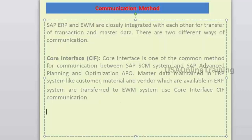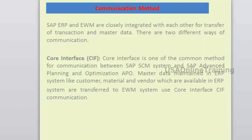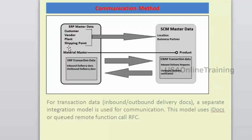When you execute the CIF transaction in ECC, all the master data is transferred into your EWM box. Remember that master data transfer is only unidirectional — from ECC to EWM — not bidirectional. Master data is called the 'product master' in the SCM/EWM box.